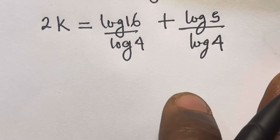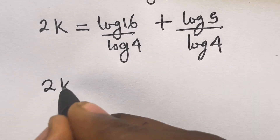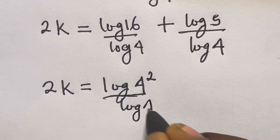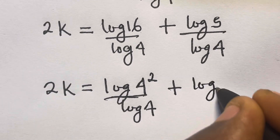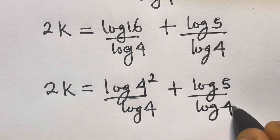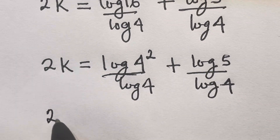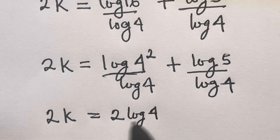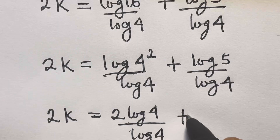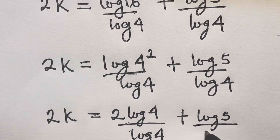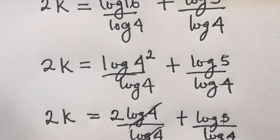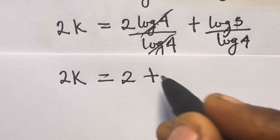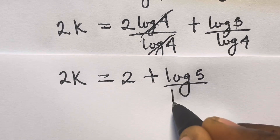From here, log 16 divided by log 4 becomes 2·log 4 divided by log 4, since 16 = 4². So log 4 cancels, and we have 2k equals 2 plus log 5 divided by log 4.